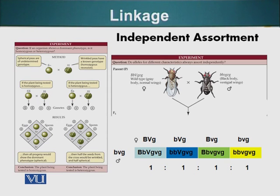He crossed two flies. One was heterozygous for the body color and the wings. The wild type body color is gray, so we will call it capital B, small b. Heterozygous for body color is capital B, small b. The homozygous dominant would be capital B, capital B, and homozygous recessive would be small b, small b.